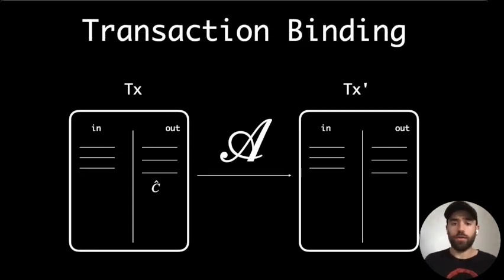Additionally, something that was not considered in our previous model was what happens if an adversary tampers with transactions before they reach the ledger. Our new notion, transaction binding, says that once a transaction is broadcasted, only the intended recipient can spend that particular output.